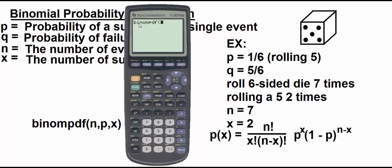So what you need to enter in, binompdf, seven comma, one-sixth, probability of a success in a single event. So you have seven events. The likelihood of having a success each time is one in six, and then comma, the number of successes, two.